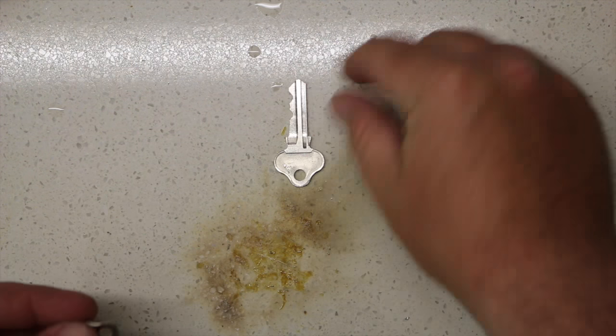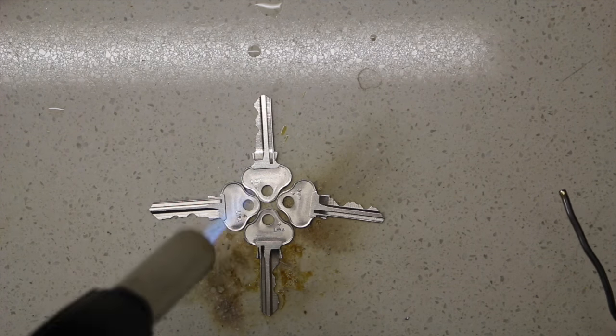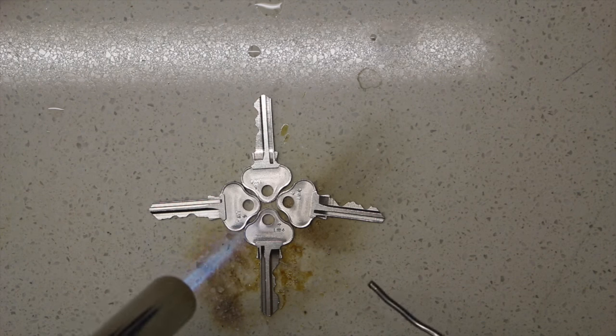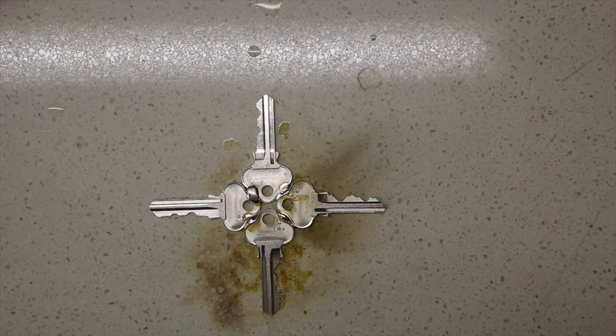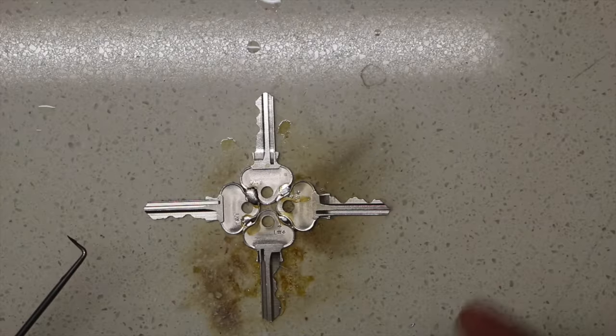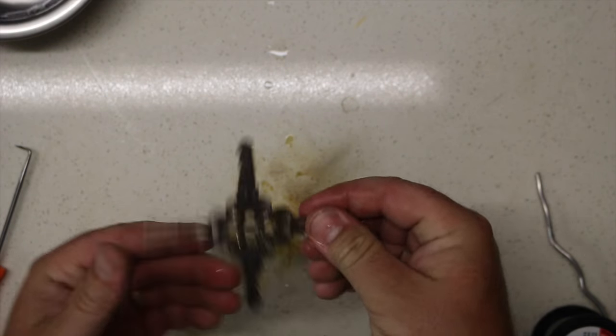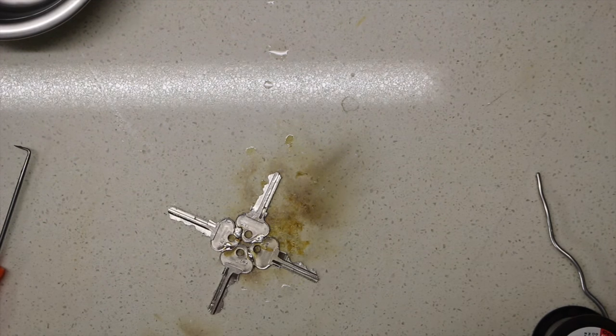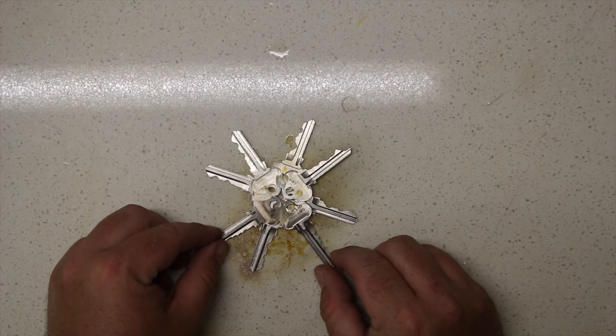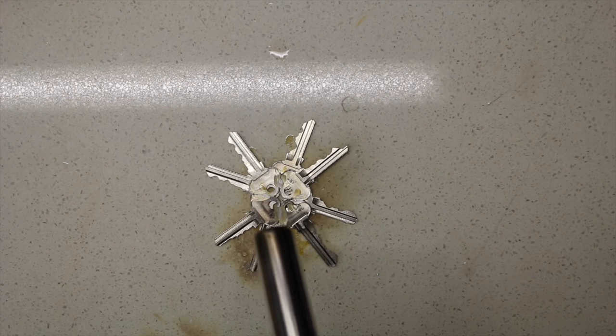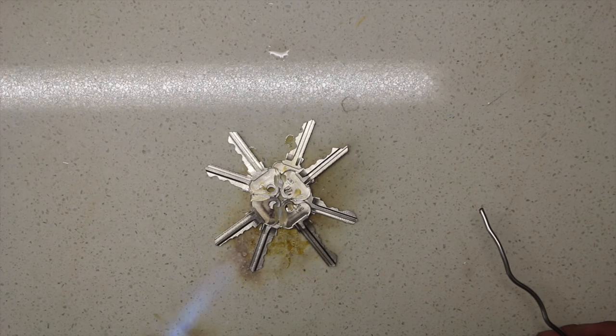I'll make another one for you here just nice and quick. There's your second set of keys. I gave them a quick file and now we can join them together. Just arrange them in whatever pattern you feel like. And once again it's as simple as just turning your torch on, putting some heat into it.